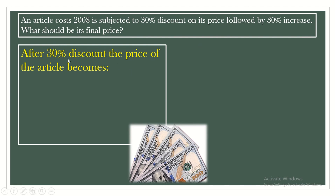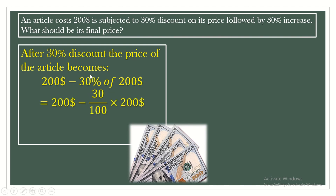So the price of this article will decrease by 30%. Its initial price was $200. We write $200 minus 30% of $200. 30% is 30 out of 100, so we write $200 minus 30 over 100 times $200. We can simplify 200 by 100 to get 2. 2 times 30 is 60, so it's $200 minus $60, which gives us $140.